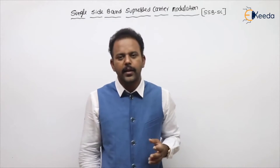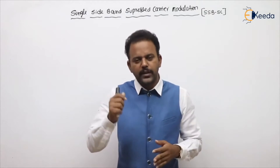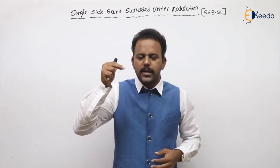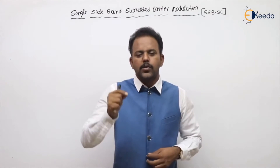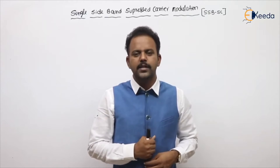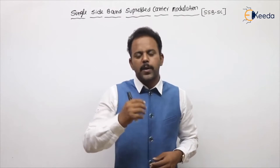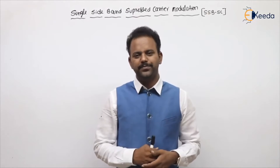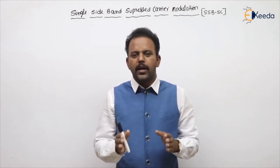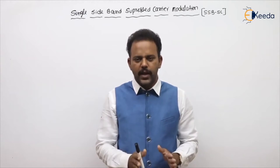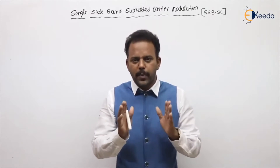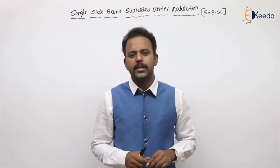If you clearly compare DSBSC modulation with SSBSC modulation: in DSBSC we have two sidebands, but in SSBSC we have only a single sideband. So 50% of bandwidth as well as 50% of power can be saved, because USB power and LSB power are always equal. When compared to DSBSC modulation, 50% of power and 50% of bandwidth we can save in SSBSC modulation.